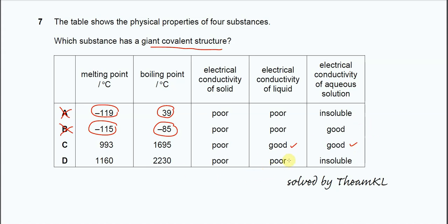This is a giant covalent structure compound. Why? Because the electrical conductivity of solid is not good, electrical conductivity of liquid is also not good. For example, like carbon, the allotropic carbon, like diamond.